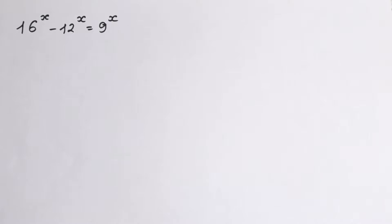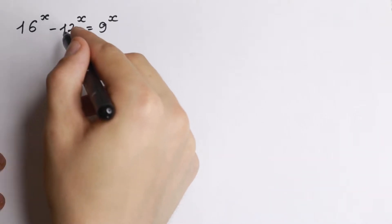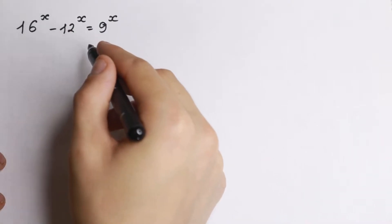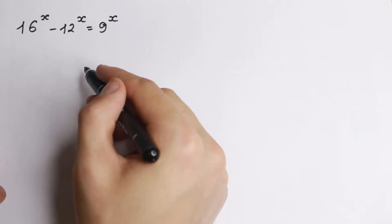Hello my friend, happy to see you here and welcome back to MathMod. Really interesting problem today: we have an exponential equation — 16 to the x minus 12 to the x equal to 9 to the x.